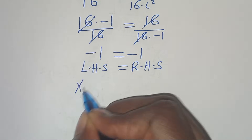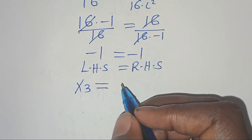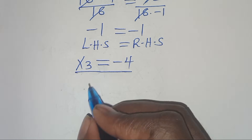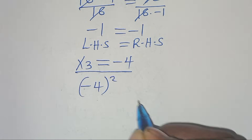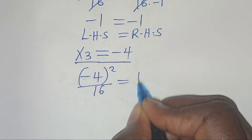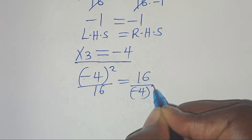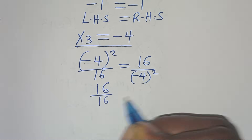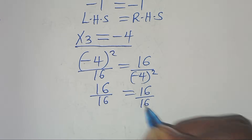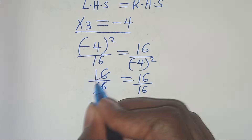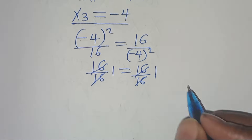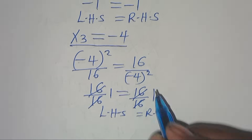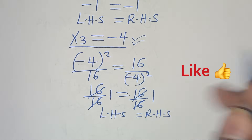For x₃ = -4: (-4)²/16 = 16/(-4)². We get 16/16 = 16/16, which gives 1 = 1. The left-hand side equals the right-hand side, verifying that x₃ = -4 satisfies the equation.